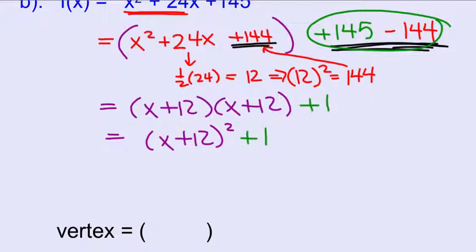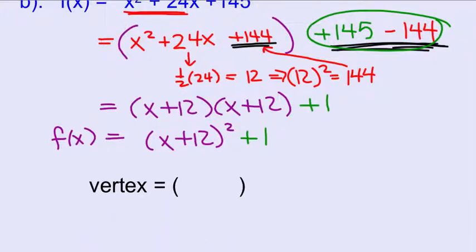Now we have it in vertex form. So I'm just going to go ahead and throw in that f(x). And now we can identify the vertex. The vertex is opposite, same.